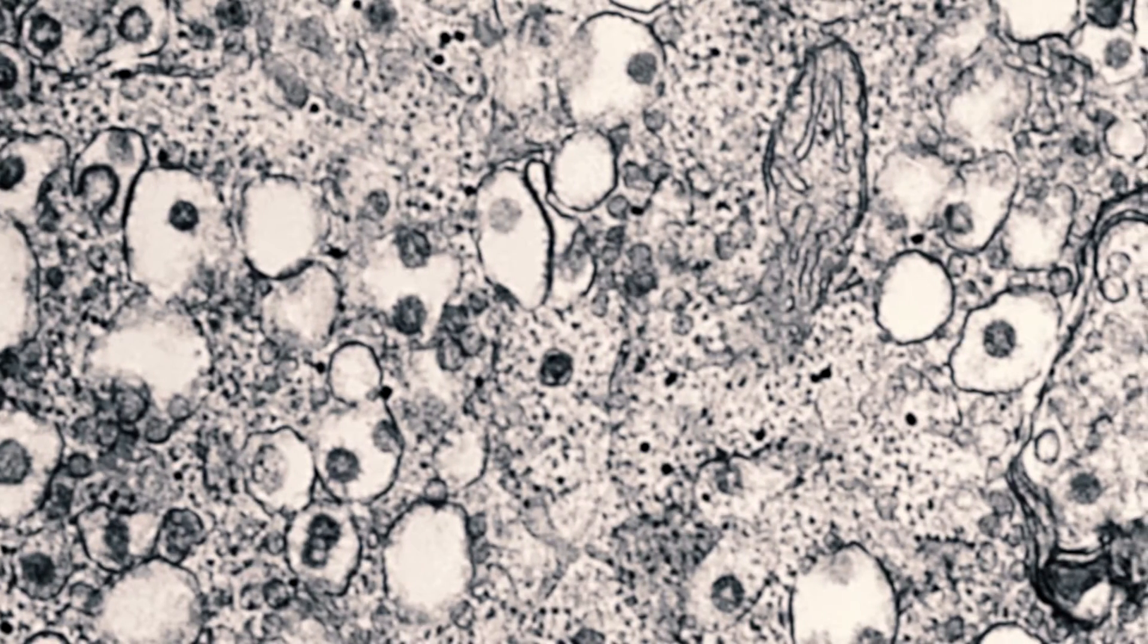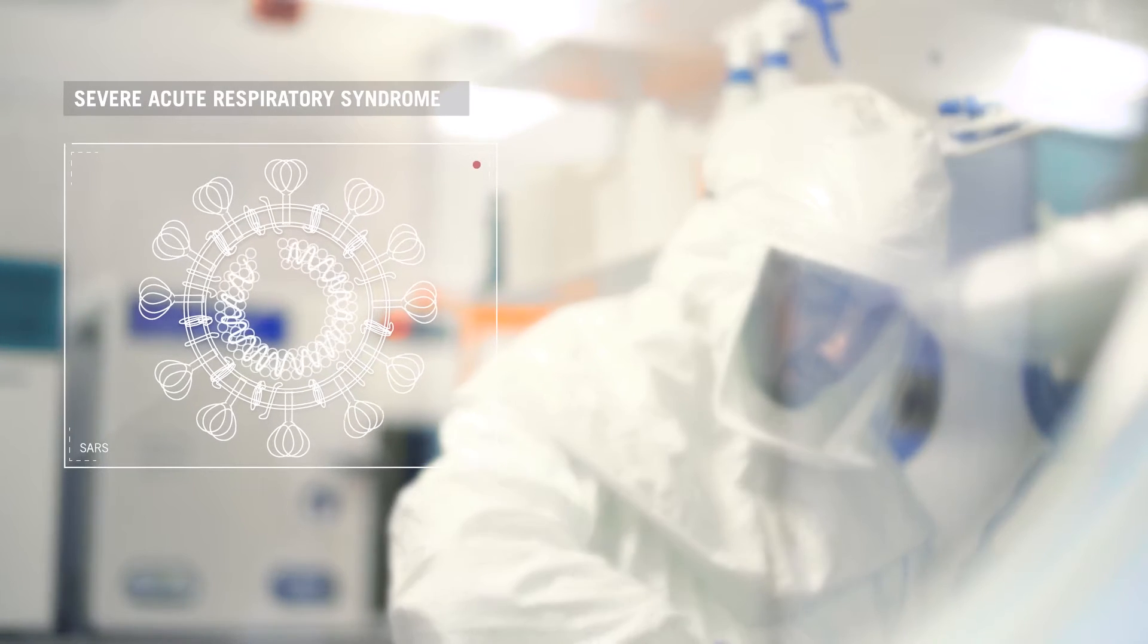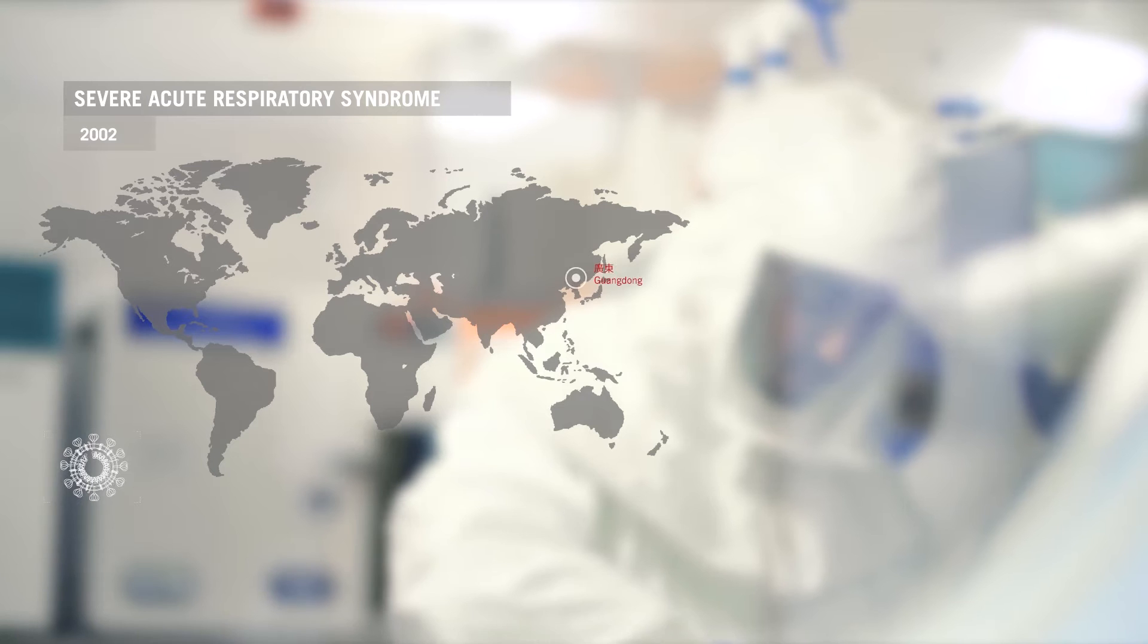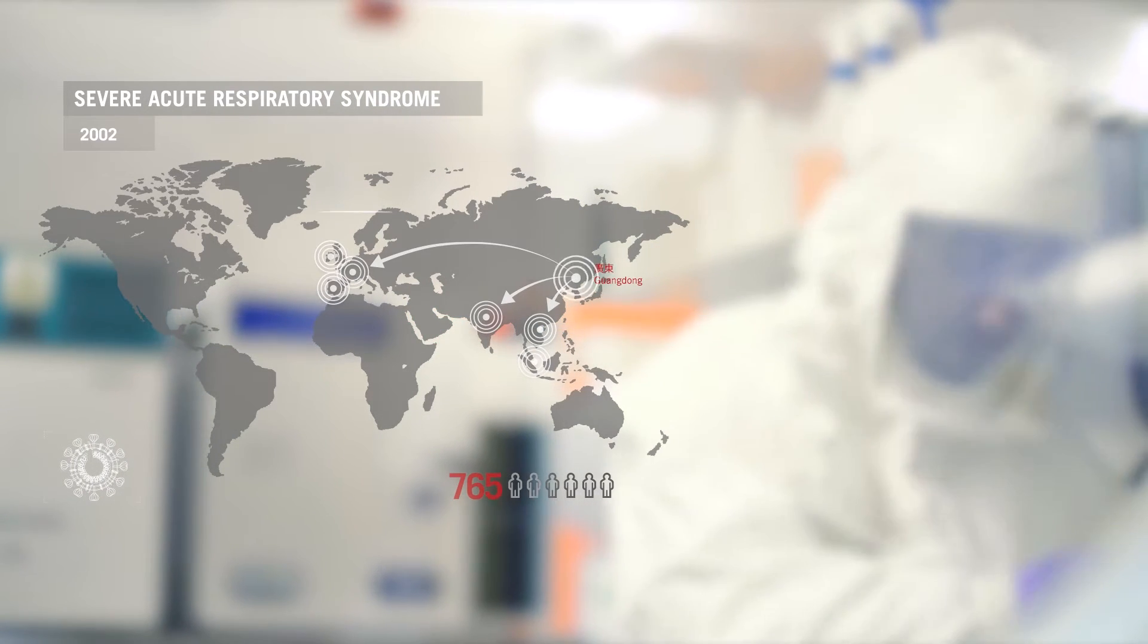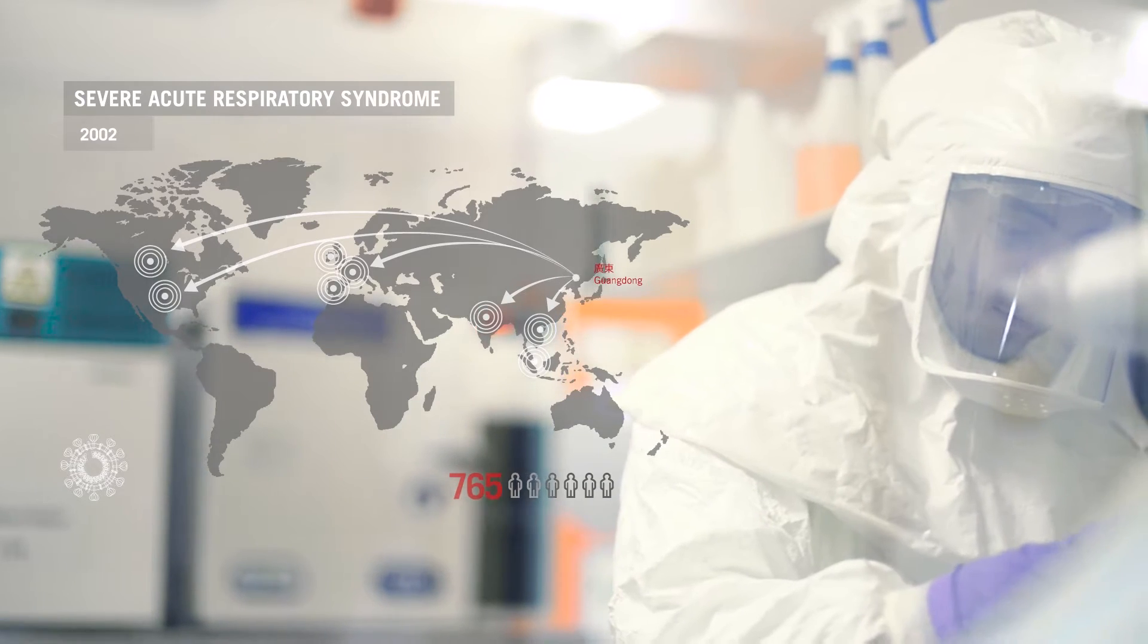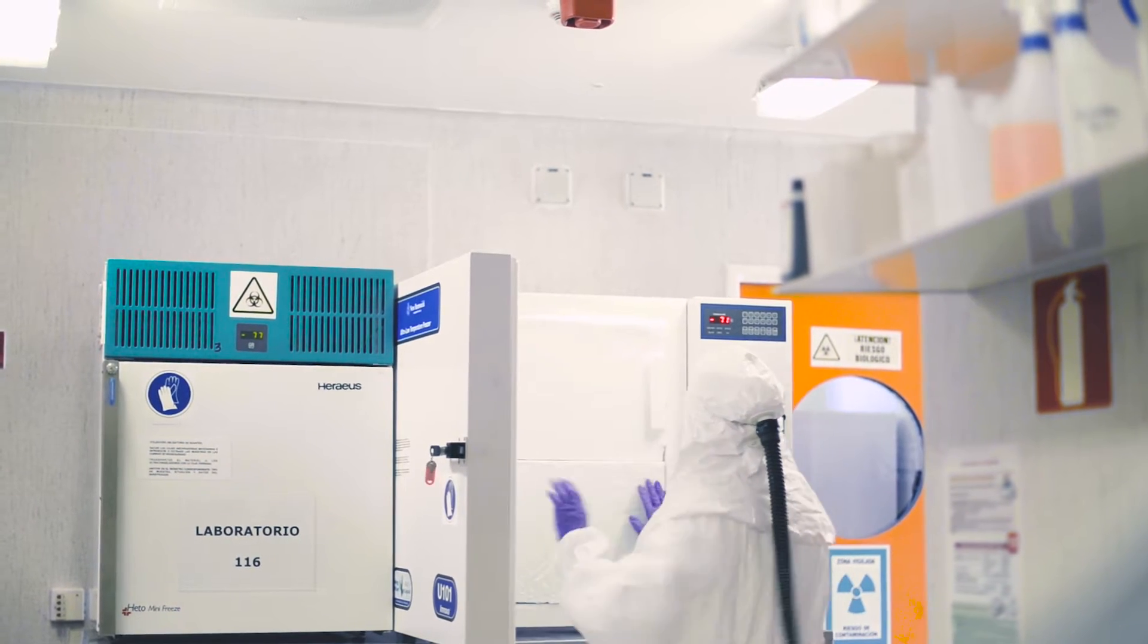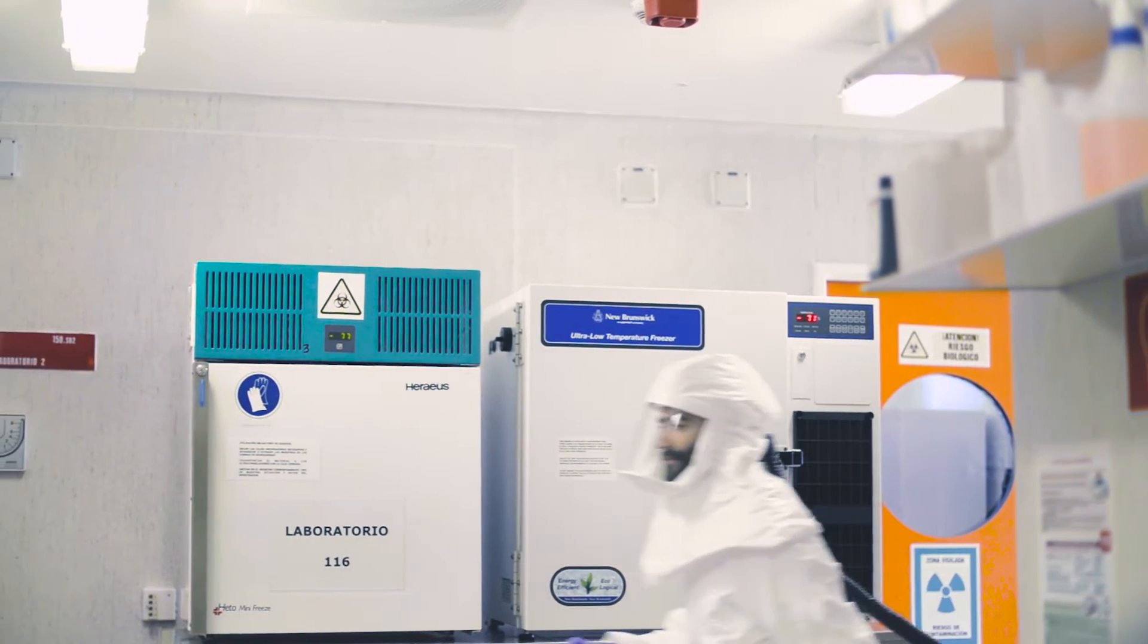At the CNB we also investigate new emerging viruses such as the acute respiratory syndrome virus. This coronavirus appeared in China in 2002 causing an epidemic with high mortality which spread rapidly across five continents. In just a decade, studies in our center have produced a prototype vaccine for this disease and identified experimental drugs.